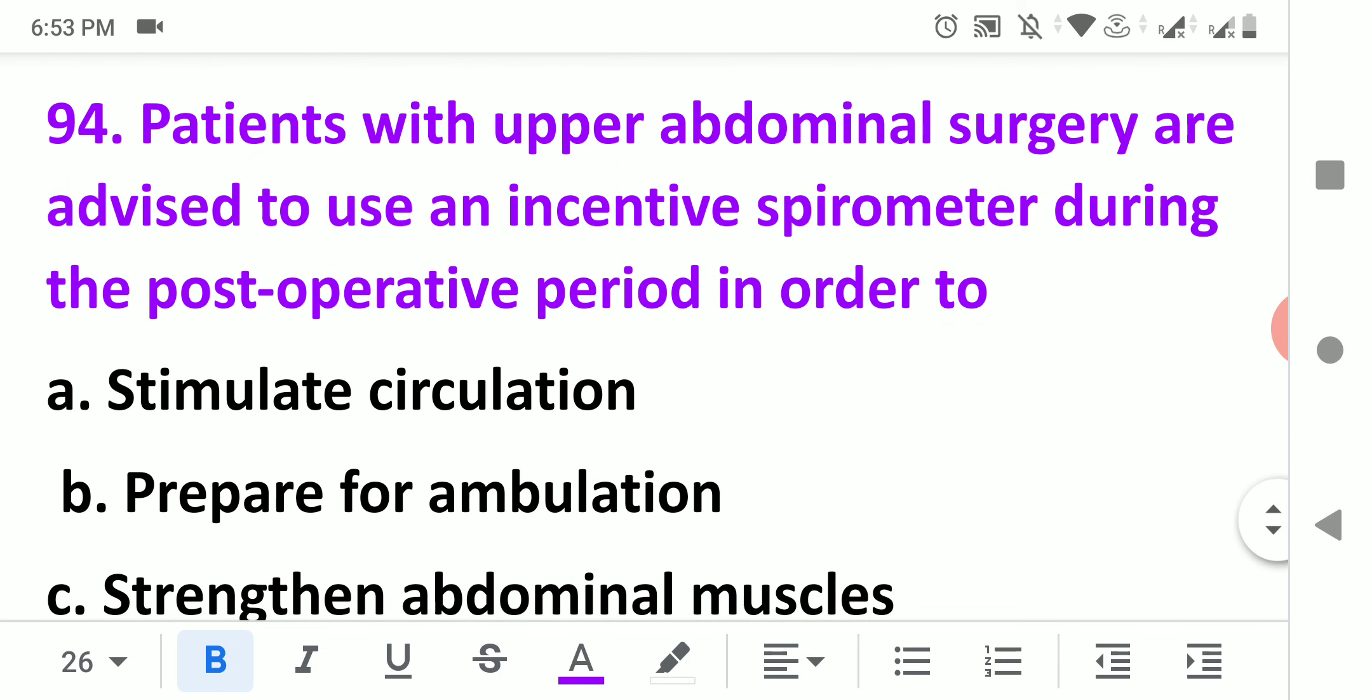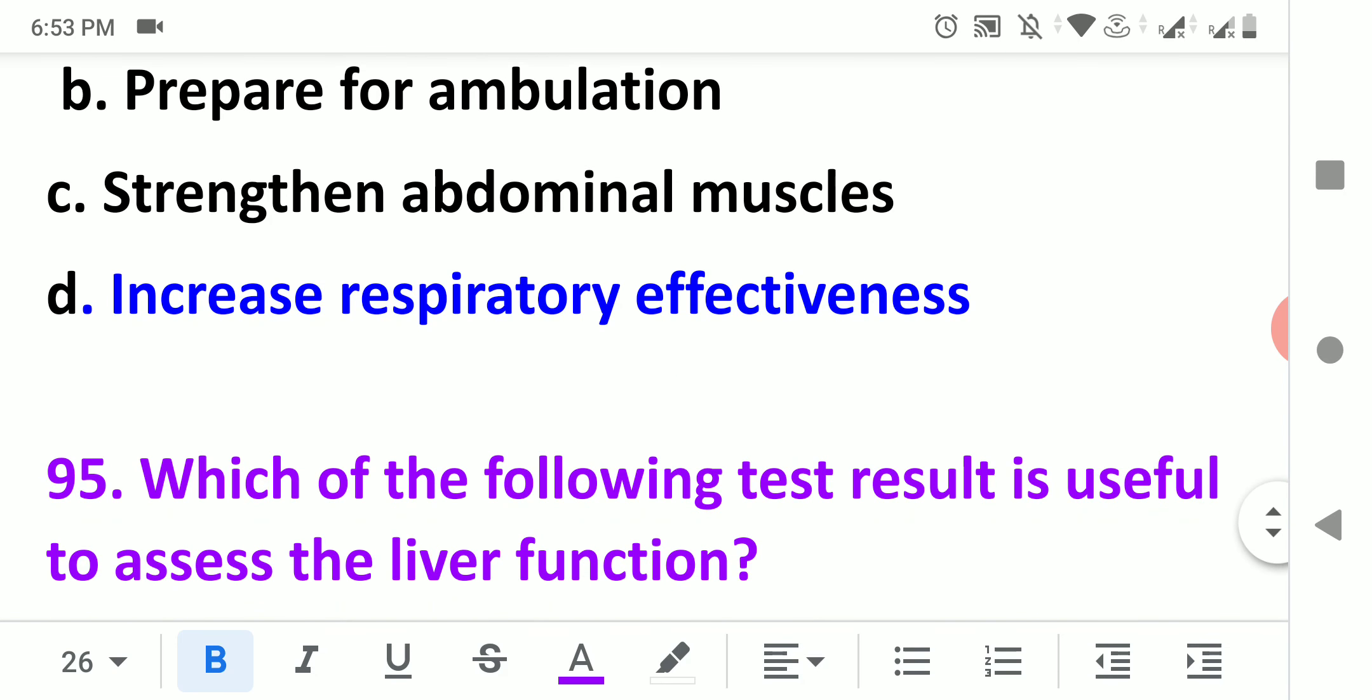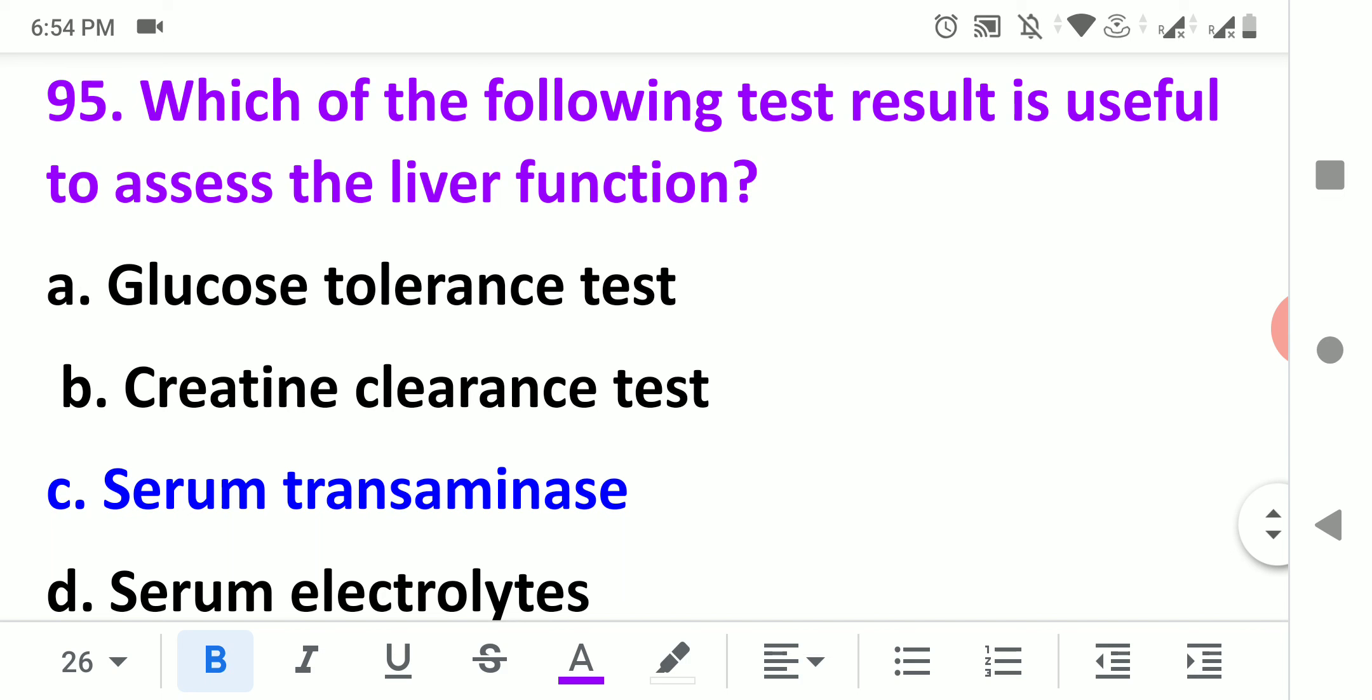What is the common compression-ventilation ratio for two rescuers CPR in adults? It's 30:2. Patients with upper abdominal surgery are advised to use an incentive spirometer during the postoperative period in order to increase respiratory effectiveness. When patients have any surgery, there are chances that respiratory function can be affected, so we prevent it by giving spirometer.